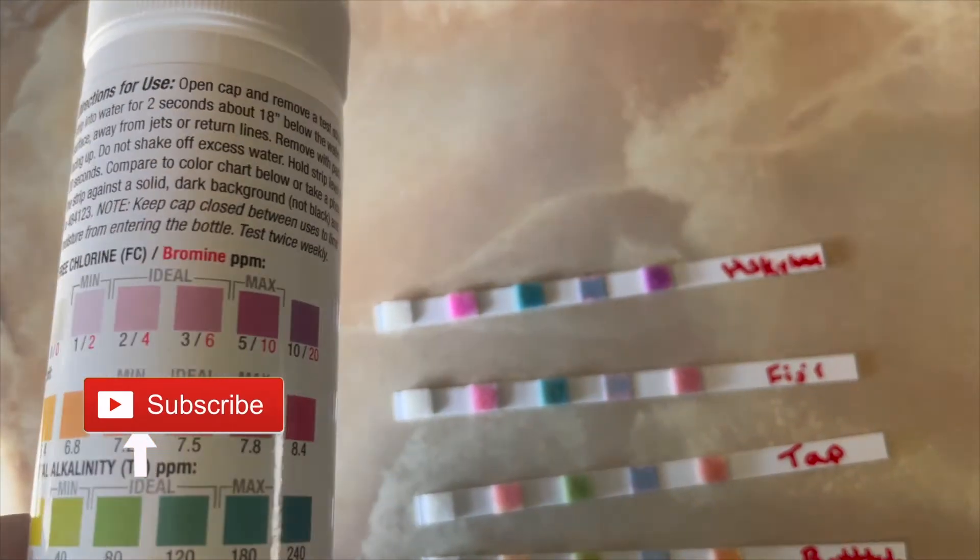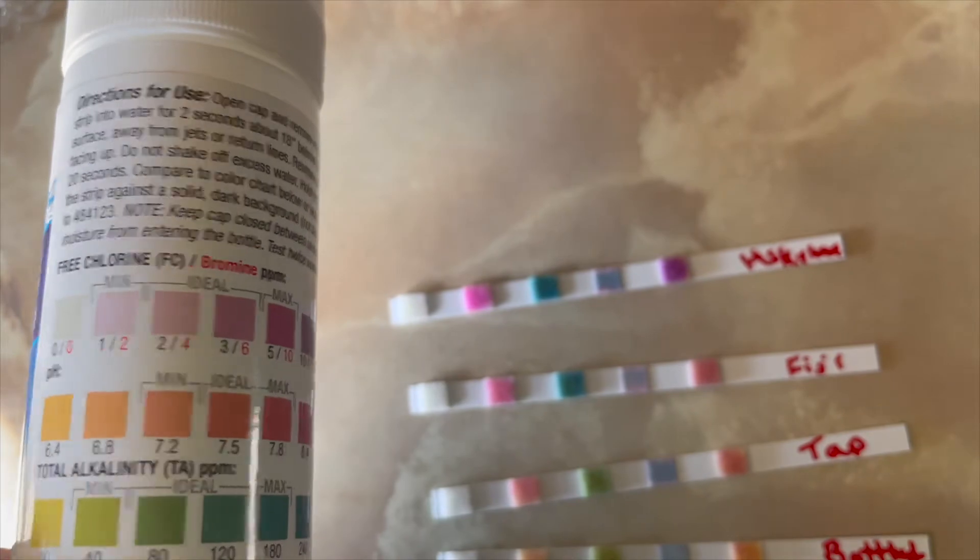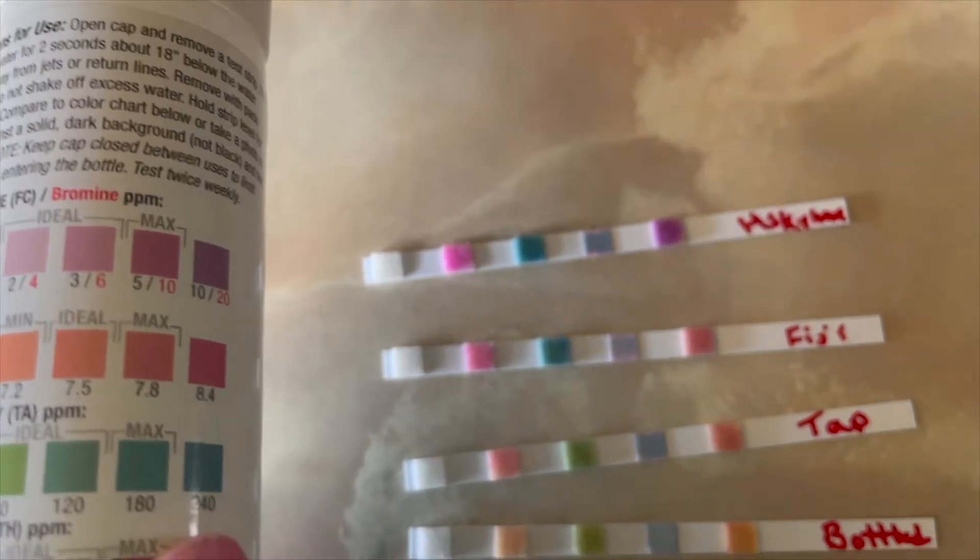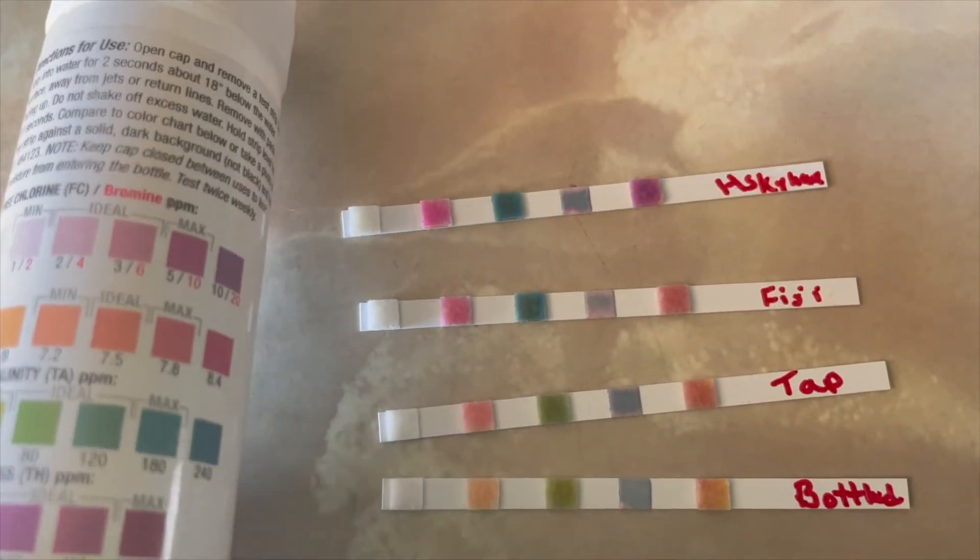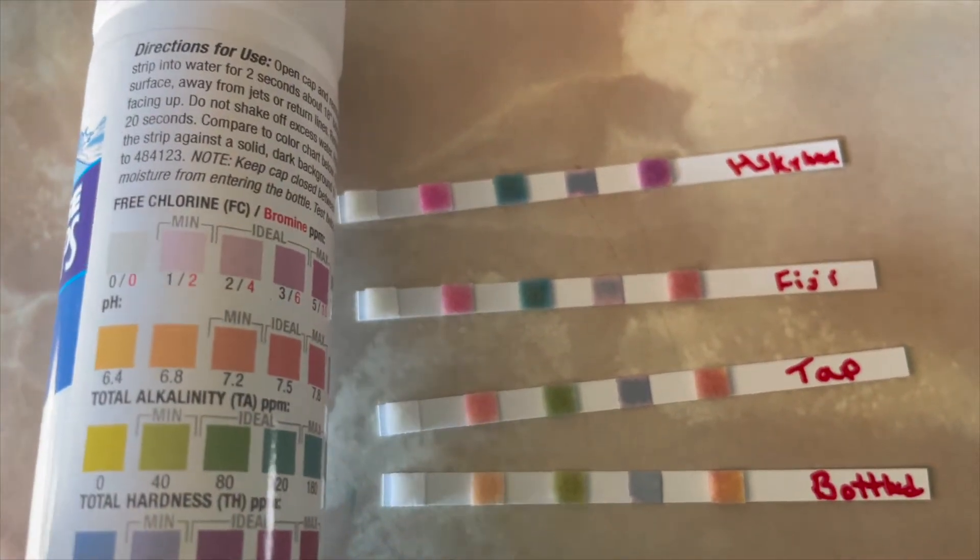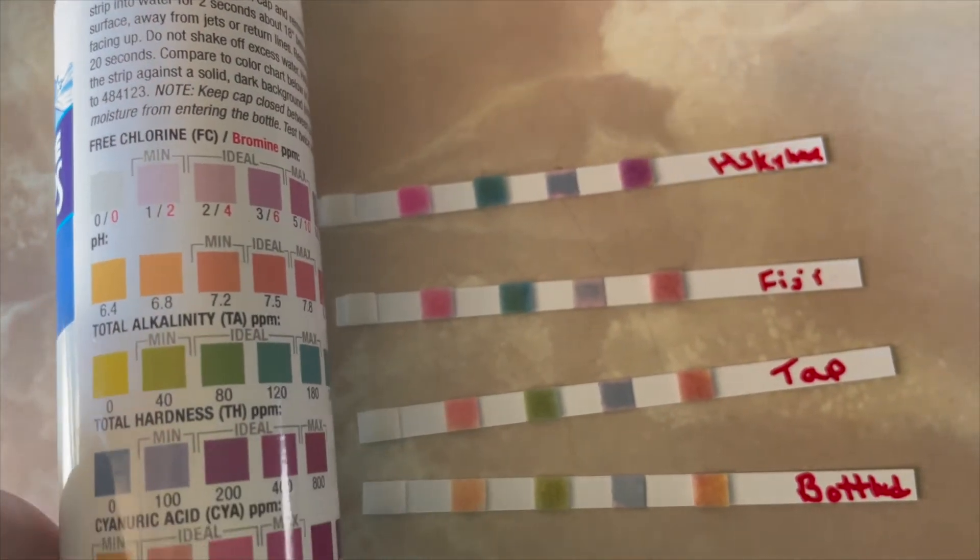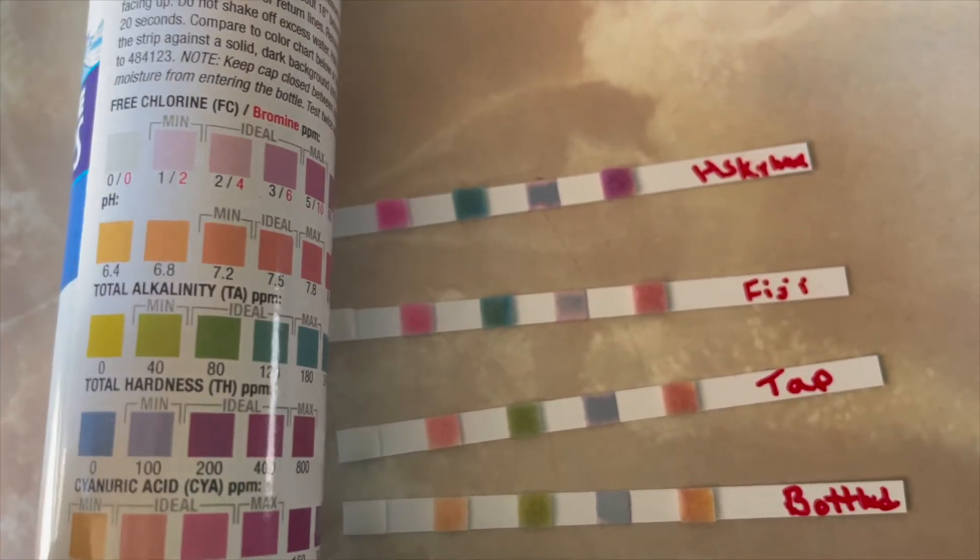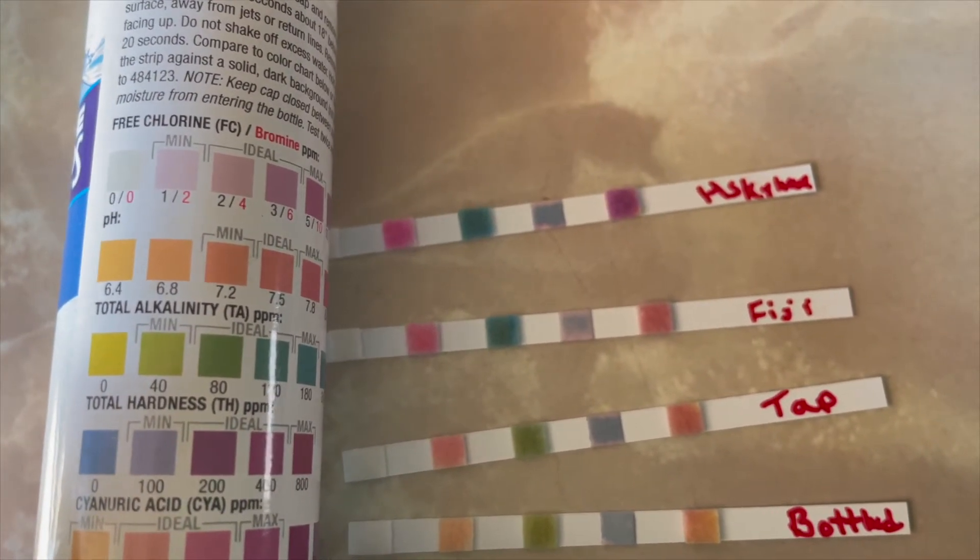So I labeled each test strip as you can see there and I grabbed my bottle of test strips which has that wonderful colorful graph on the back and there you can measure the chlorine, pH, all of that stuff. So that first row is all white thank goodness because we really don't want to be drinking any chlorine.